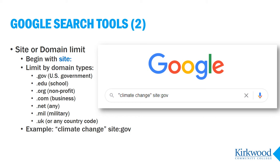It's the .com, .edu, .org, or the many other domain types you might run across. So in this example, I can search for information about climate change published on a .gov site.